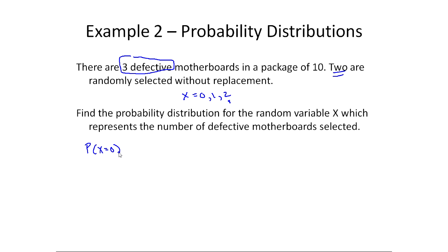So what I need to do is find the probability x equals zero, the probability x equals one, and the probability x equals two. Well, the probability x equals zero is the probability that we have two good motherboards, in other words none are defective. That's an and probability because we're picking two. So if I pick the first one, the probability it's not defective—well, if there's three defective, there must be seven that are good—is seven out of the total of ten.